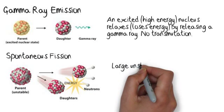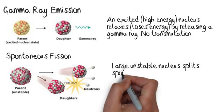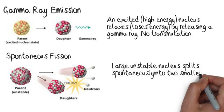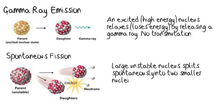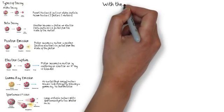And then the last one we have is spontaneous fission. And in spontaneous fission, what we have are a very large parent nucleus that breaks down into two or more smaller nuclei, daughter nuclei, because it's just too unstable.